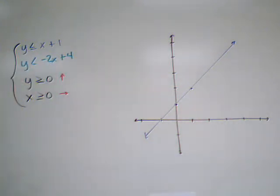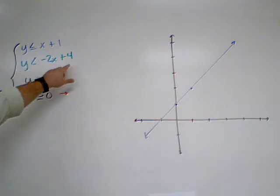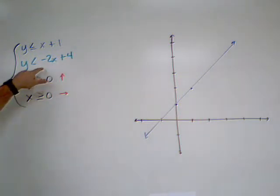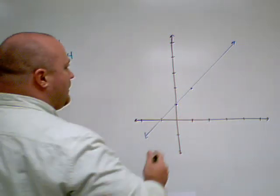And then the second one was just less than, so that means I'm going to have a dotted line this time. But I still need to know where it's going to go. Well, my y-intercept is four, because if x is zero, then the value of y just becomes four. So I have a point here.